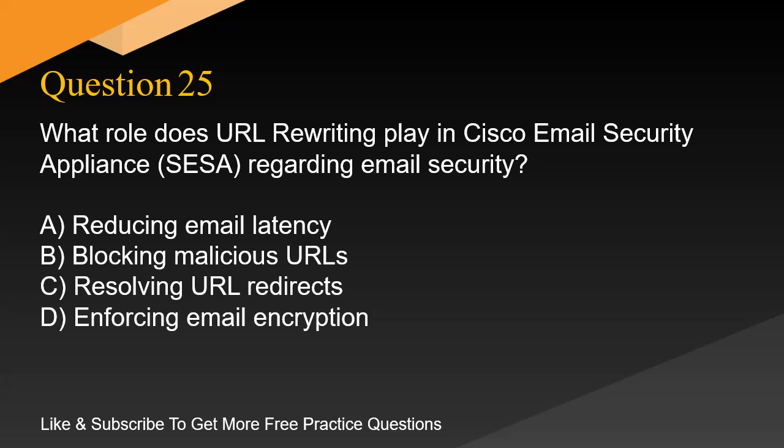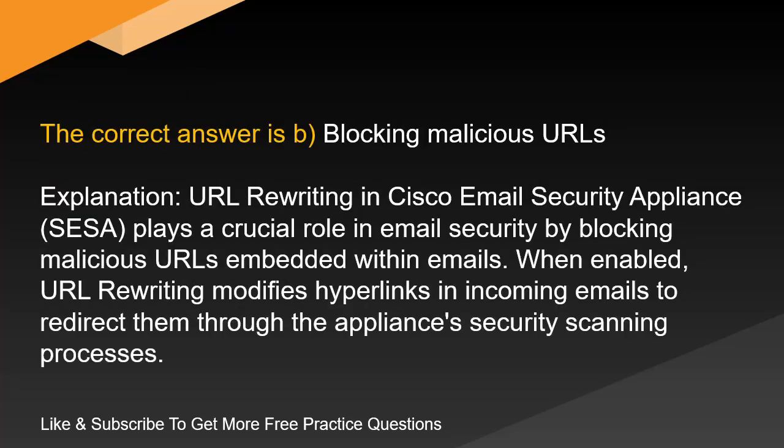Question 25. What role does URL rewriting play in Cisco Email Security Appliance (SESA) regarding email security? A. Reducing email latency. B. Blocking malicious URLs. C. Resolving URL redirects. D. Enforcing email encryption. The correct answer is B. Blocking malicious URLs. URL rewriting in SESA plays a crucial role in email security by blocking malicious URLs embedded within emails. When enabled, URL rewriting modifies hyperlinks in incoming emails to redirect them through the appliance's security scanning processes.